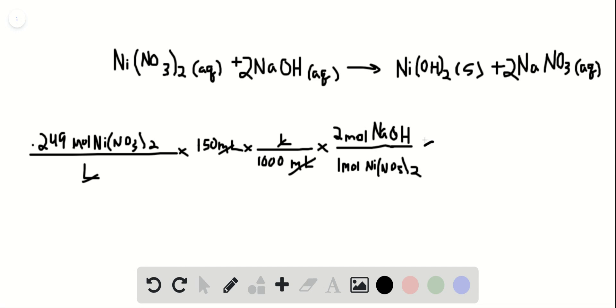And then finally, we can multiply this by the concentration of the sodium hydroxide solution we're using, and that is 0.1 molar or 0.1 moles of sodium hydroxide per liter. And again, moles here cancel, moles of nickel nitrate cancel, and we're left with liters of the sodium hydroxide solution.